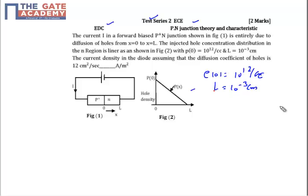We need to calculate the current density in the diode, assuming that the diffusion constant of holes is 10⁶ cm per second. The diffusion constant is given and we need to find the current density.